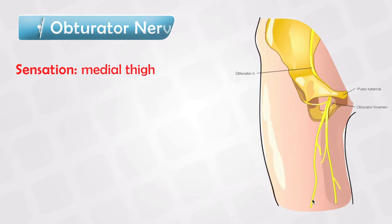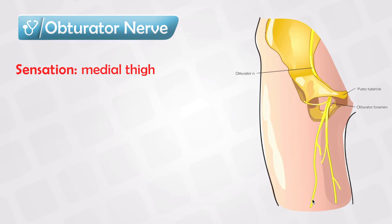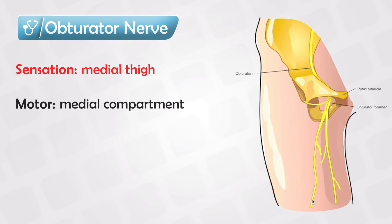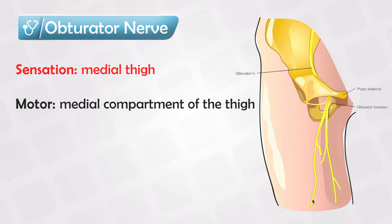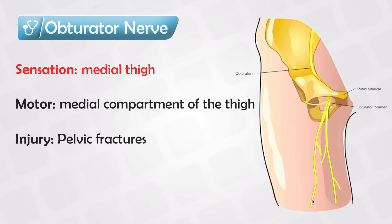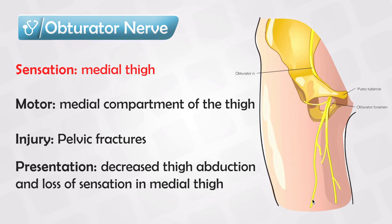Next, we have the obturator nerve, and it supplies sensation to the medial thigh, and these are the muscles supplied. This nerve can also be injured in pelvic fractures, and the patient simply presents with loss of sensation in the medial thigh and decreased adduction of the thighs.